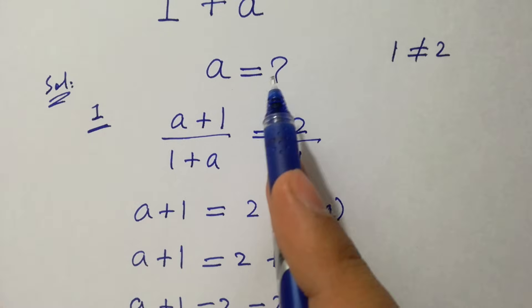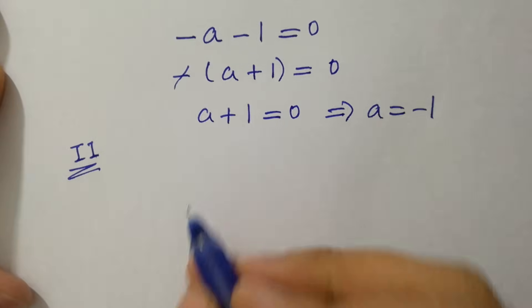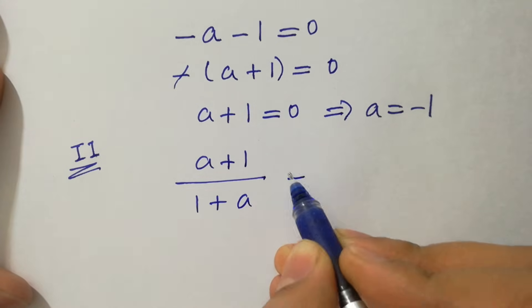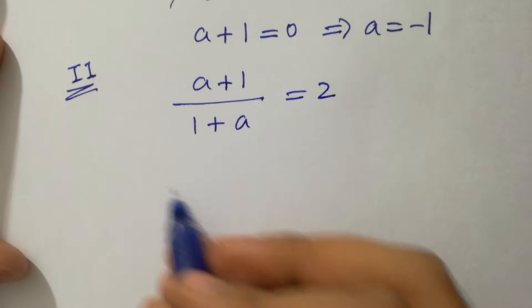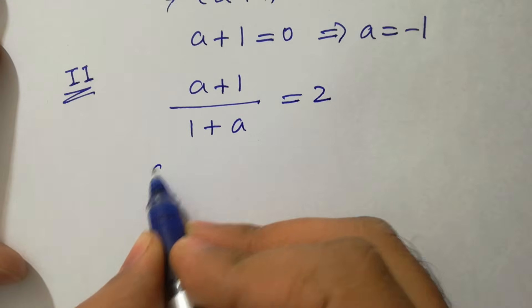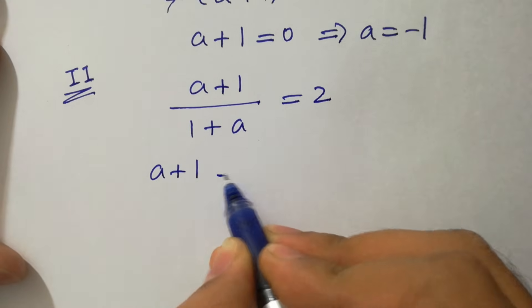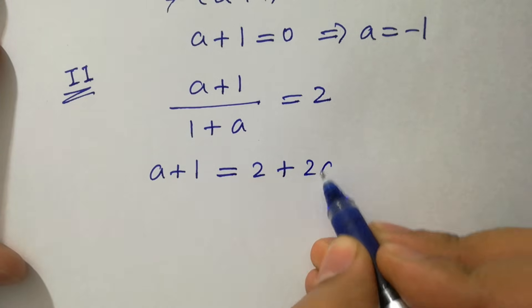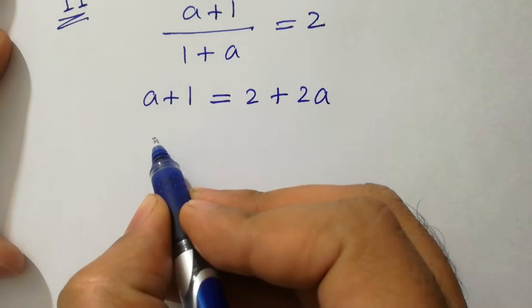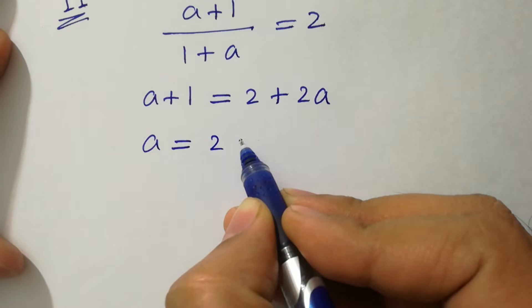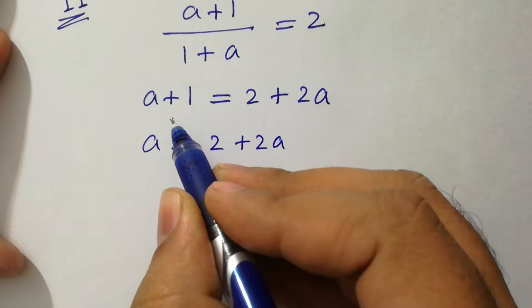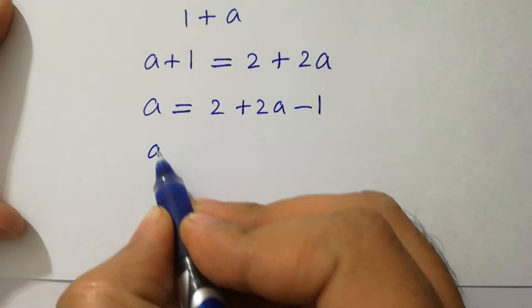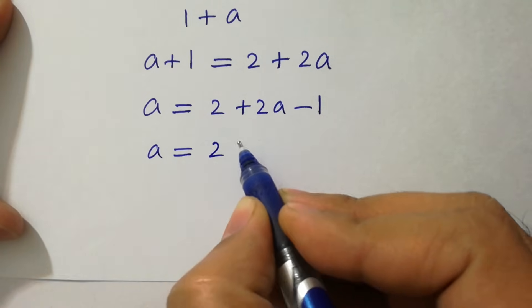For the second method, we have (a+1)/(1+a) = 2. We can write a+1 = 2(1+a), which gives a+1 = 2 + 2a. Rearranging, a - 2a = 2 - 1, so we get a+1 on the right hand side becoming -1.